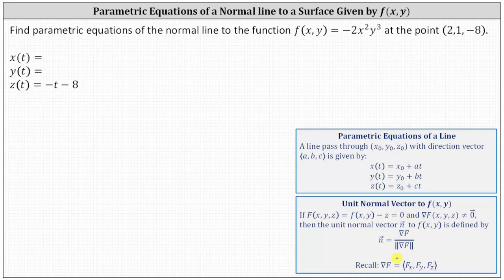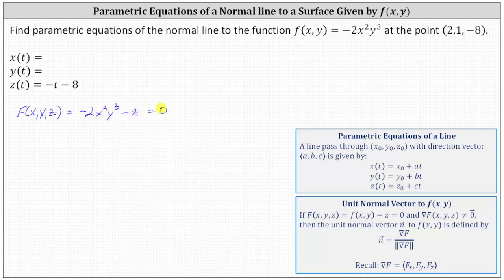This formula gives us a unit normal vector. We only need a normal vector, so we can just evaluate the gradient of F at the given point. So F(x, y, z) = -2x²y³ - z = 0.